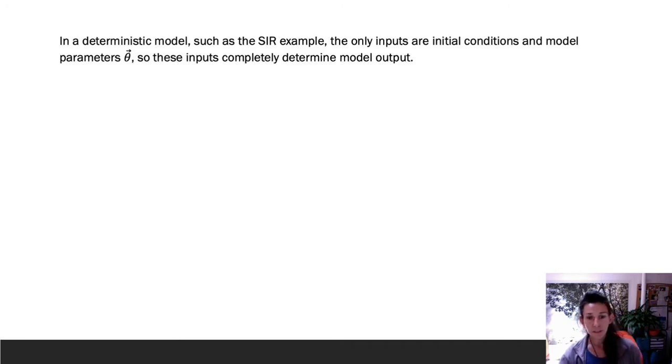In a deterministic model, like the SIR example I just showed, the only inputs to the model are the initial conditions and the model parameters θ. So those inputs completely determine the model output, and it becomes very important to understand how the parameters influence that model output.